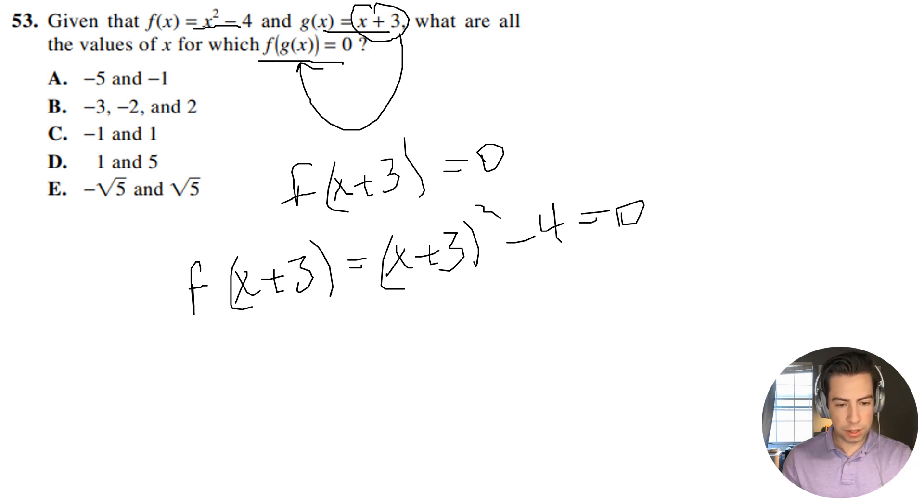So let's go ahead and factor this out. I'm going to have x squared plus 6x plus 9 minus 4 equals 0. I'm going to have x squared plus 6x plus 5 equals 0.